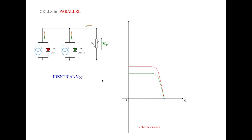Consider the case where PV cell 1 and PV cell 2 have characteristics as shown. These are non-identical characteristics; however, the VOC point is identical. Paralleling these types of cells will also lead to exactly similar nature of the resulting IV characteristic as we saw for identical cells being paralleled.